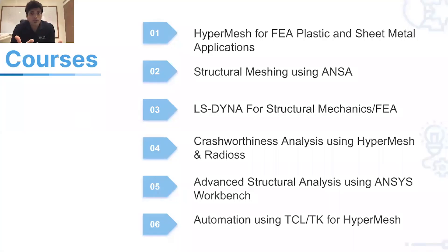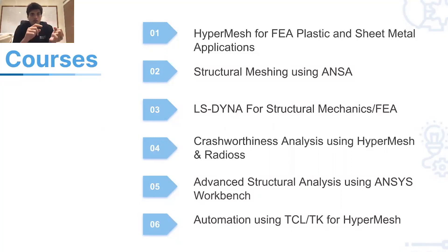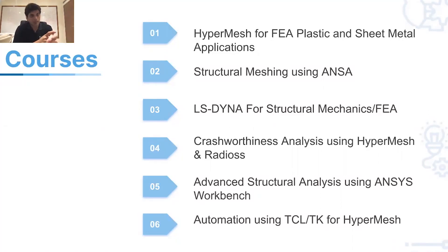There are six courses in total. The first two are on pre-processing: HyperMesh for FEA plastic and sheet metal applications, and structural meshing using ANSA. The next three courses are on solvers: LS-DYNA for structural mechanics, crashworthiness analysis using HyperMesh and Radioss, and advanced structural analysis using ANSYS Workbench. The sixth course is automation using TCL/TK for HyperMesh, which helps automate pre-processing.